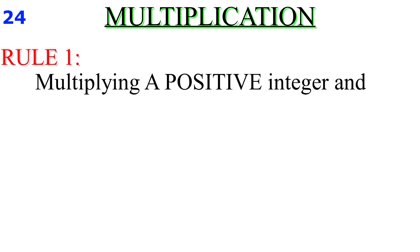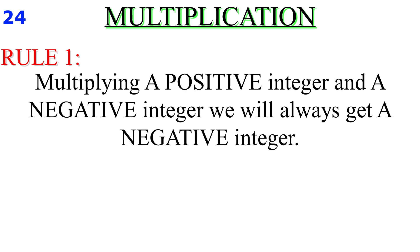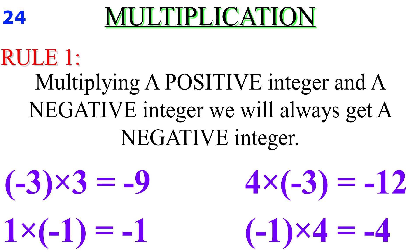My dear little friend, there are two rules when multiplying negative numbers. Rule number one: when multiplying a positive integer and a negative integer, the product is always negative.